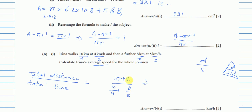Total distance is 18, and when you add the times in your calculator you get 4.1, or exactly 41 over 10 — simplifying further gives 4.390 and so on. Remember to show at least 4 significant figures. The final answer to 3 significant figures is 4.39.